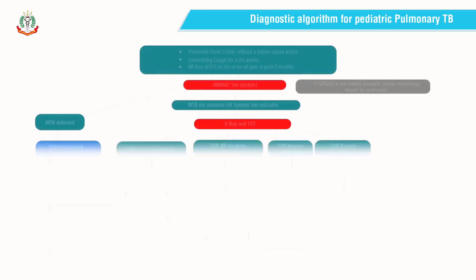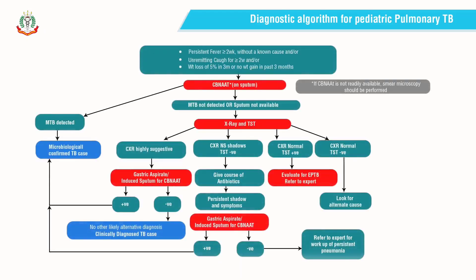This algorithm will help you in diagnosing pediatric TB cases. In children with presumptive pulmonary TB, all attempts need to be made to microbiologically confirm the diagnosis through proper specimen. We all know that collection of sample is difficult in pediatric TB, but all effort should be made to get a proper sample. Alternative specimens like gastric aspirate, bronchoalveolar lavage, or induced sputum may be collected and subjected to CBNAAT if sputum is not available.